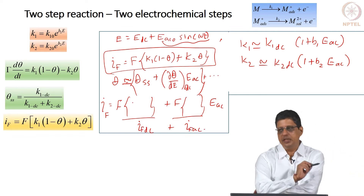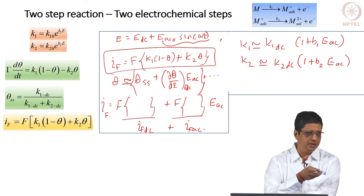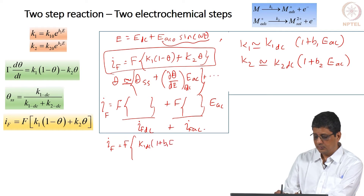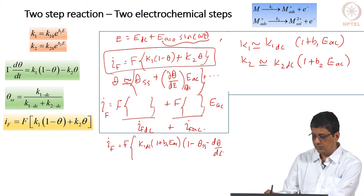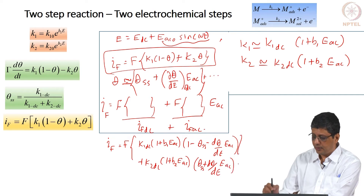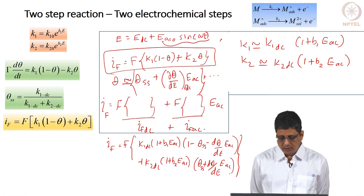What I would like you to do is first group these terms. We still have to find d(theta)/dE, and that is not going to be the same as what you got in the previous class, because k2 is now also a function of potential.